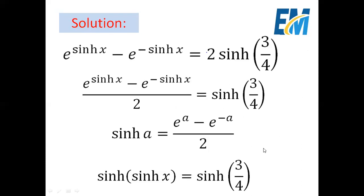The first step we will do is divide the whole equation by 2. So e to the power of sinh(x) minus e to the power of minus sinh(x), all over 2, equals sinh(3/4). Recall that the formula of hyperbolic sine is: sinh(a) = (e^a minus e^(-a)) / 2.